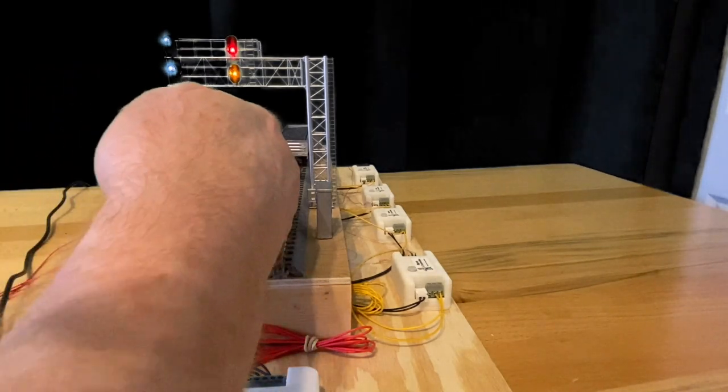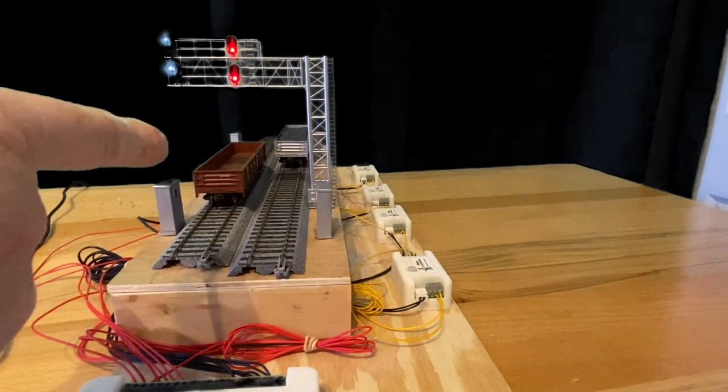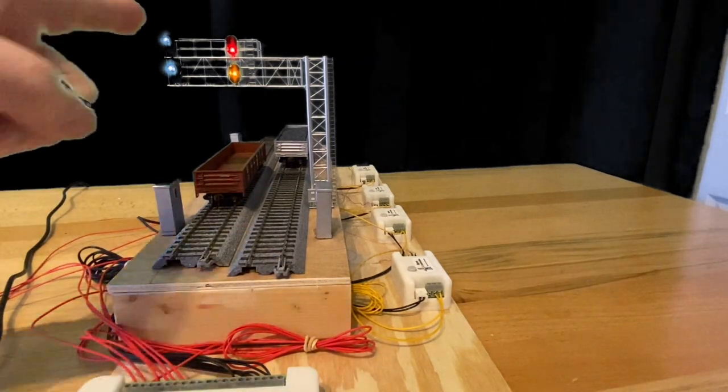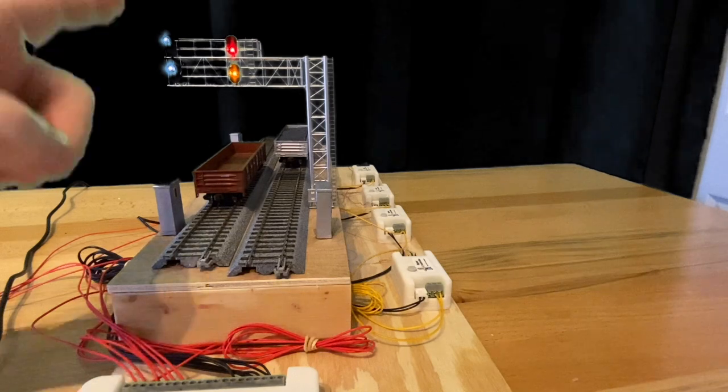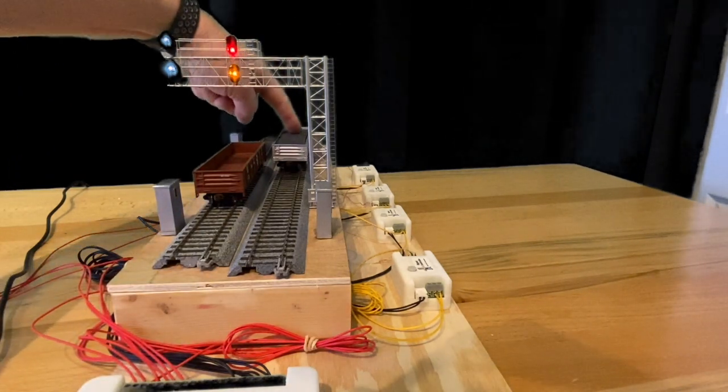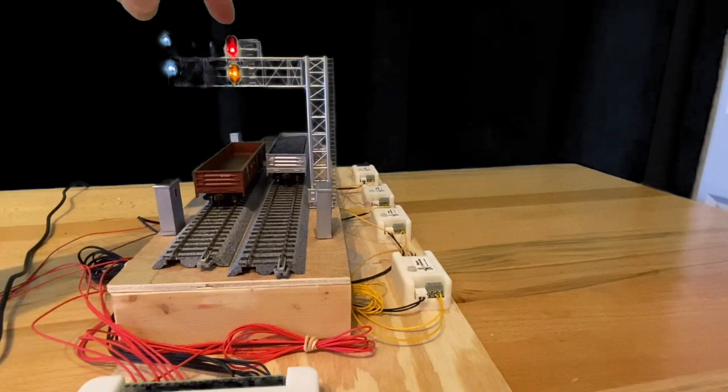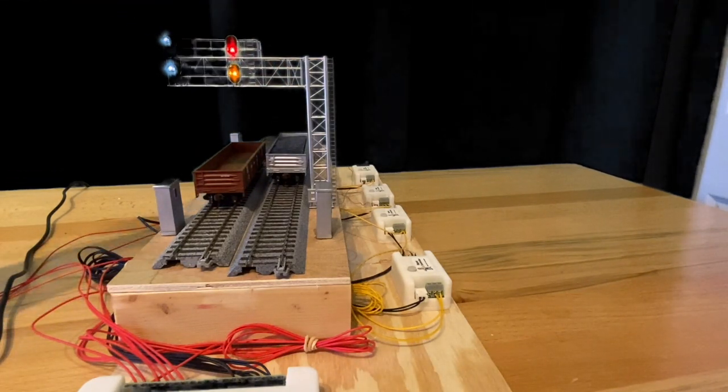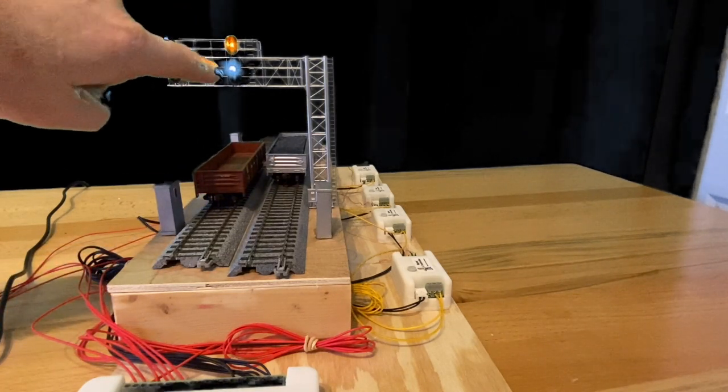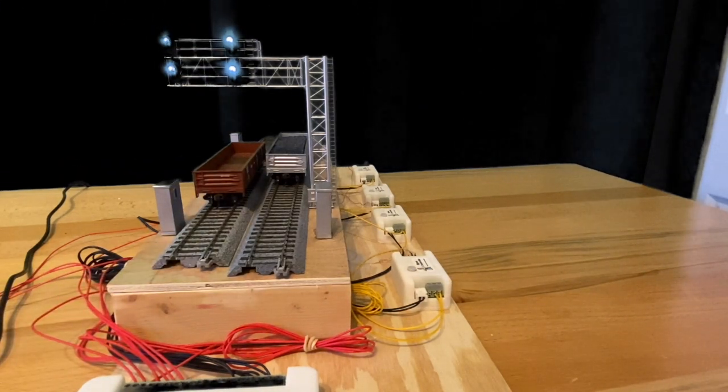If another train came along here and tripped it, it would change to red. Now the train backed up, let's say, or got out of the way. It will go to yellow but it will not go to green until the train ahead clears the sensor. I'm going to move it out of the way from in front of the sensor. You'll see this one change, start to change to yellow and go through its sequence. And you will also see this one go through its change. This one changed to green. That's how latching works.